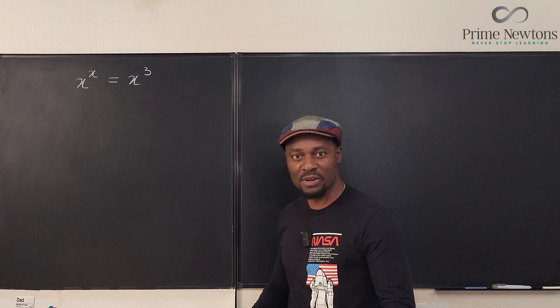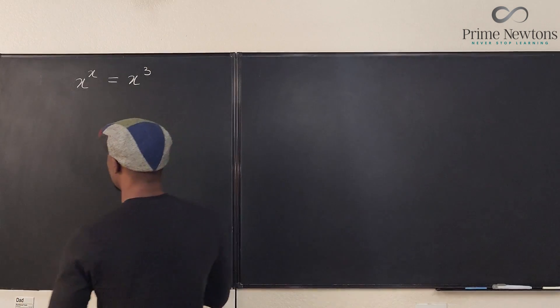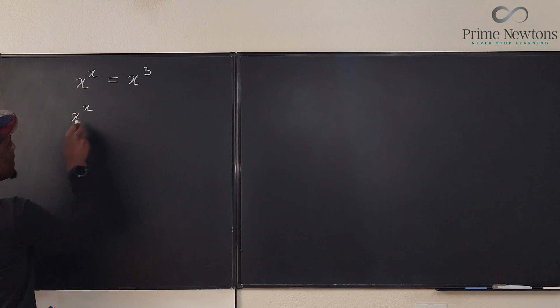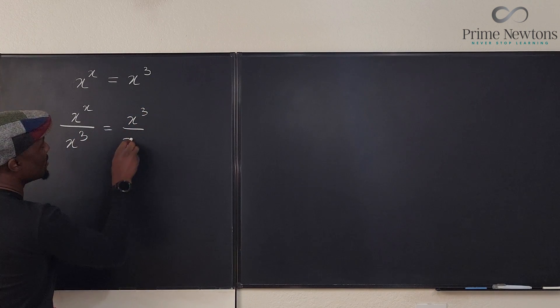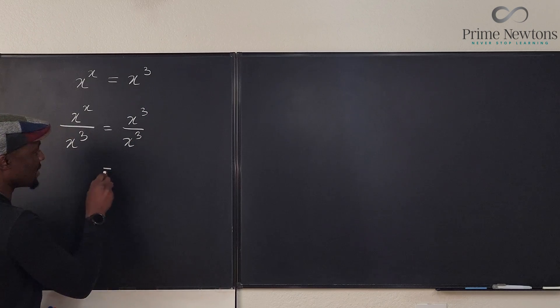I think for the sake of this it makes it easier to divide both sides by one of the two terms. So let's do this: let's divide x to the x by x to the third, and we divide this also by x to the third. So on the right hand side we're going to get one.